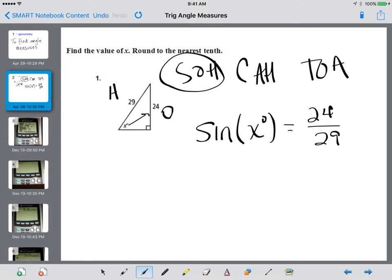So to find the angle measure, we say x is going to equal the inverse. We're going to undo it. The inverse sine of 24 divided by 29.